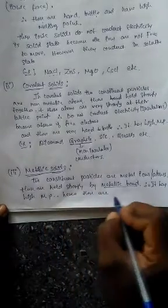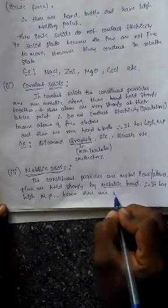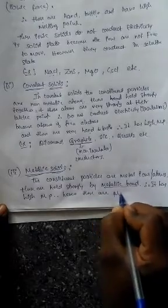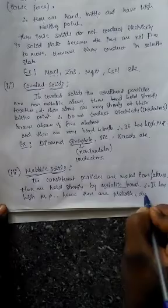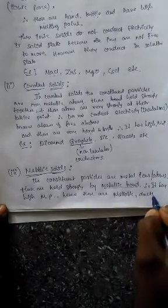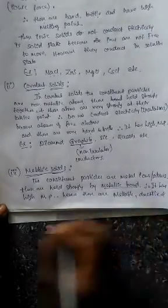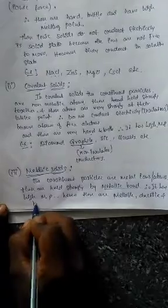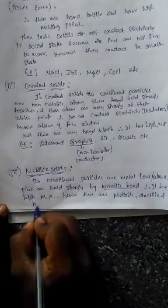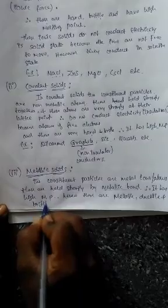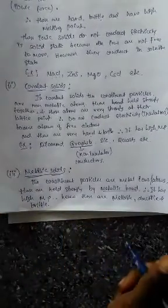Hence, metallic solids are malleable, ductile, and brittle. These are the characteristic physical properties of metals.